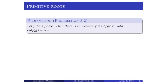Here is the statement: let p be a prime. Then there is an element g — for some reason these are always called g — in z mod p z star, with the order of g modulo p being p minus one. That is to say, the smallest positive integer n such that g to the n is congruent to one modulo p is p minus one. That's the largest the order could possibly be, because by Fermat's little theorem, g to the p minus one is always one mod p, no matter what g is. So it's an element g with maximal order.